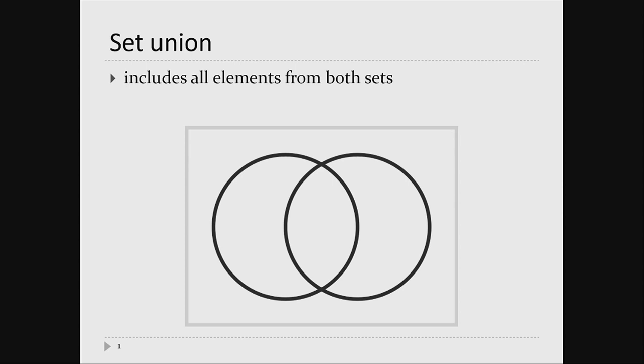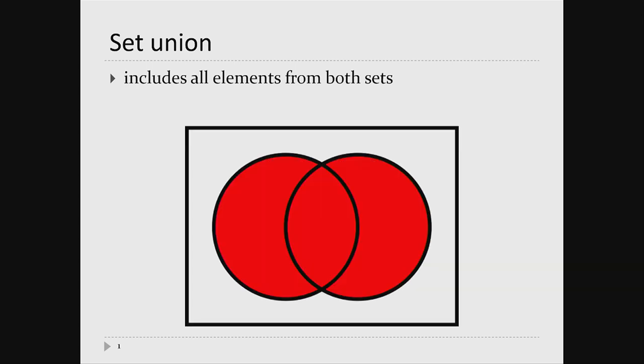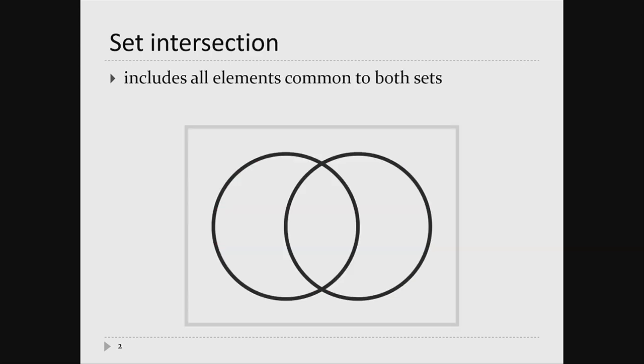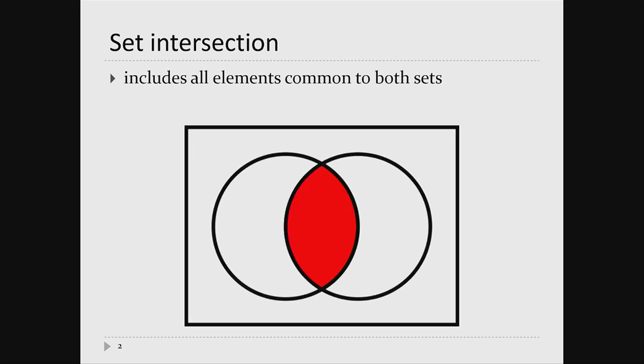So these are Venn diagrams. I'm reasonably sure you've seen these before. I've got two sets shown as overlapping circles. If you want the union of these two sets, it's just everything that's inside both sets — the stuff shown in red. The intersection of these two sets is just the elements that are common — the part that overlaps.